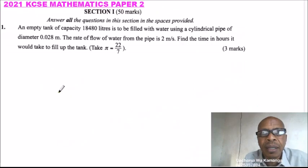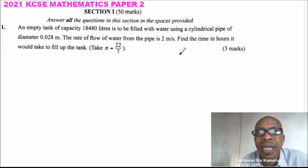2021 KCSE Mathematics Paper 2, Section 1, which consists of 50 marks. The instructions answer all the questions in this section in the spaces provided.